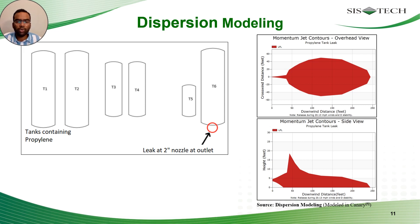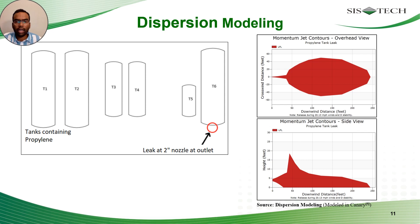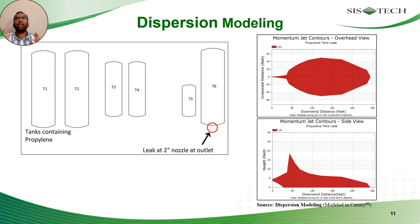Consider a situation where a chemical is leaking from a storage tank from a two-inch nozzle at 300 psi pressure and 88 degrees Fahrenheit temperature. You can use simple Gaussian models to get the release contours. In this case, it's a high-pressure scenario, so it is a momentum jet — you get the overhead view and the side view, which help you understand the footprint of the gas cloud in your facility. This becomes an input parameter for your scenario coverage calculations.